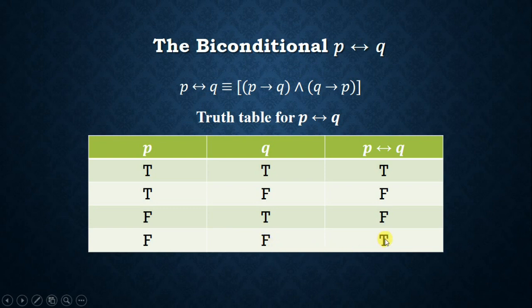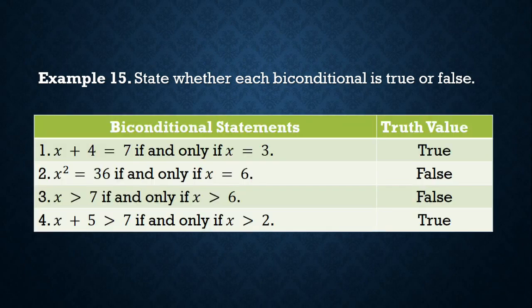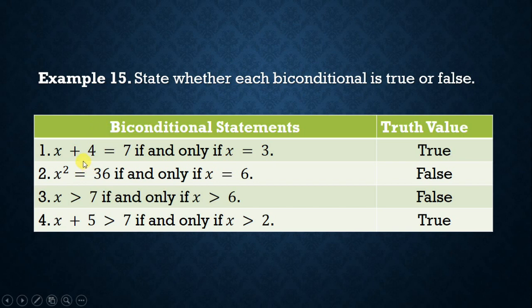Example: state whether each bi-conditional statement is true or false. Number one: x + 4 = 7 if and only if x = 3. Observe that both equations are true for any value of x, so since the equations have the same truth values, the bi-conditional statement is true.